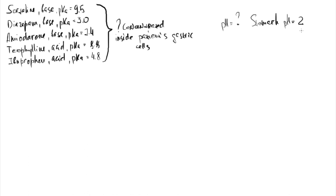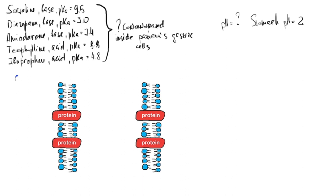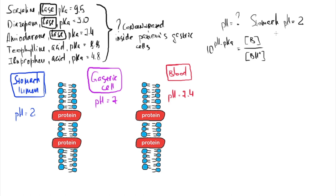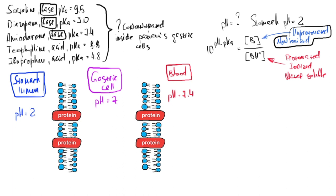We have a model with two biomembranes. On the left is the stomach lumen with pH 1 or 2. In the center are the gastric cells — where we look for drug concentration — with an assumed neutral pH of 7. On the right is blood with pH 7.4. We have three basic drugs, and using the Henderson-Hasselbalch equation for weak bases: 10^(pH − pKa) = ratio of uncharged (non-ionized) to charged (ionized) form.